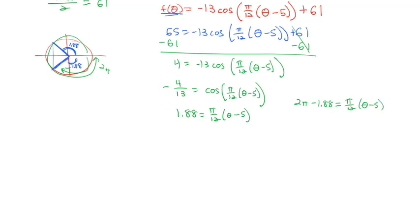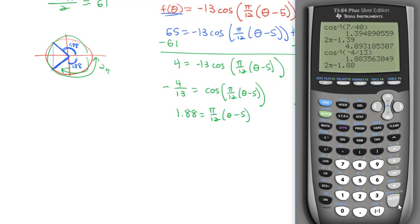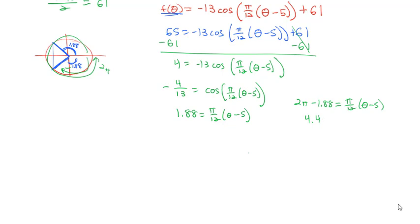And so if I do that on my calculator, 2π minus 1.88, we get about 4.40. So 4.4 is the other time, π/12·(θ - 5).